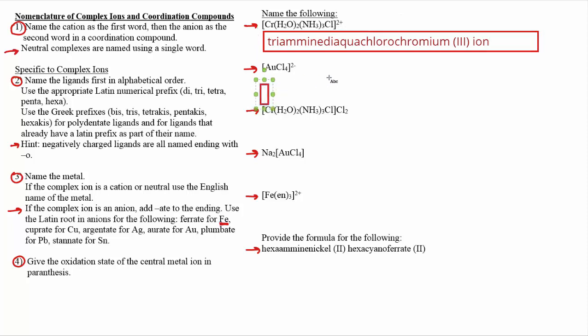Cool, next example, just a complex anion. So in this case we'll name the ligands first. There's only one so it makes this a little easier. There's four of them, we say tetra, and they're chloro ligands, so tetrachloro.